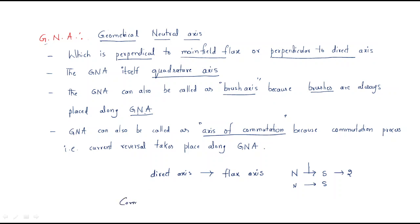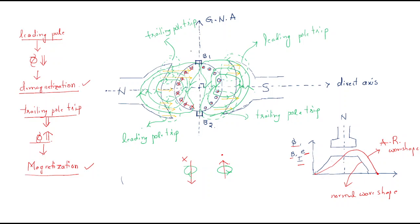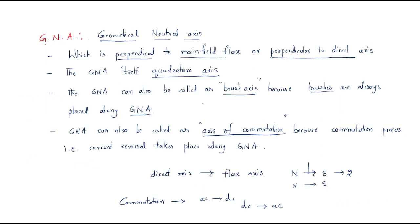GNA can also be called the axis of commutation. Commutation is the process used to convert AC to DC or DC to AC. In DC machines, commutators are connected at the brushes, which is why this is called the axis of commutation. The commutation process — that is, current reversal — takes place along the geometrically neutral axis.